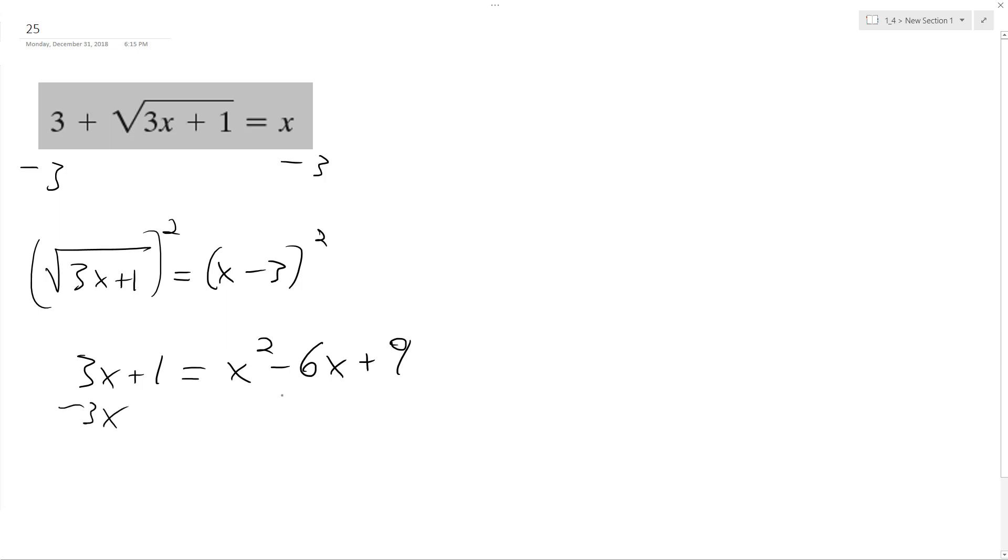Alright, subtract these over here. So, we end up with x squared minus 9x plus 8 equals 0.